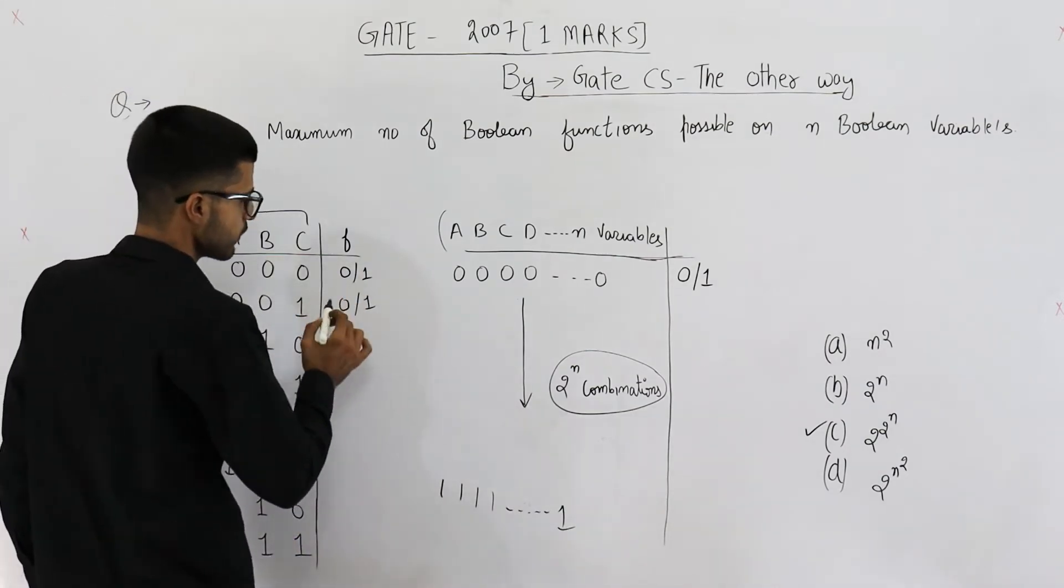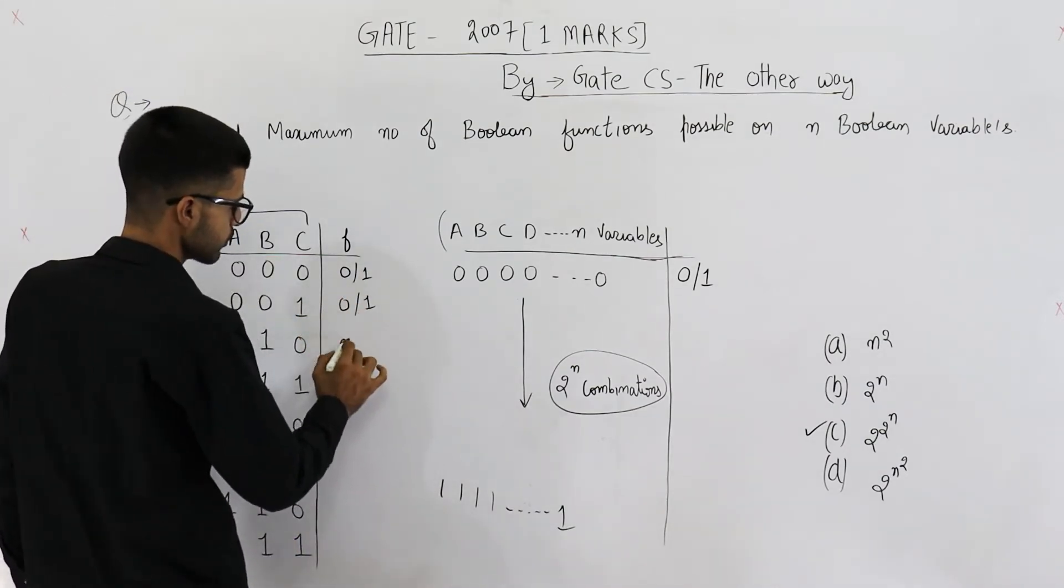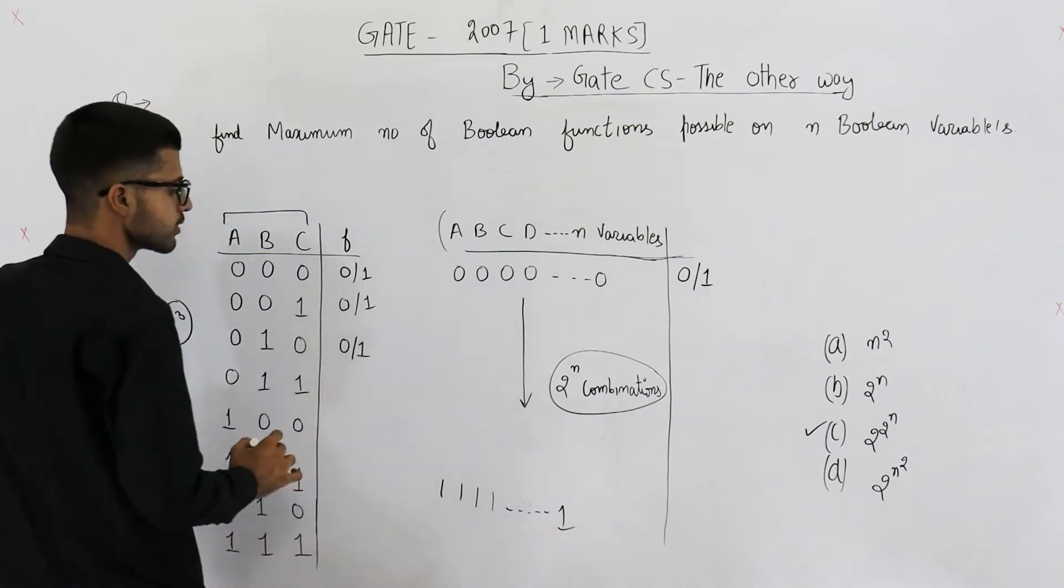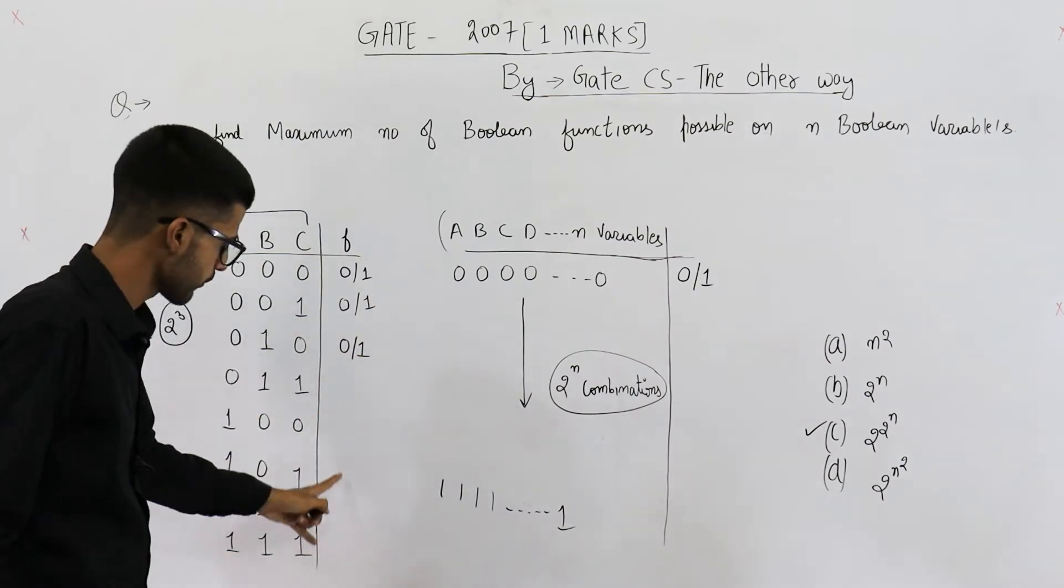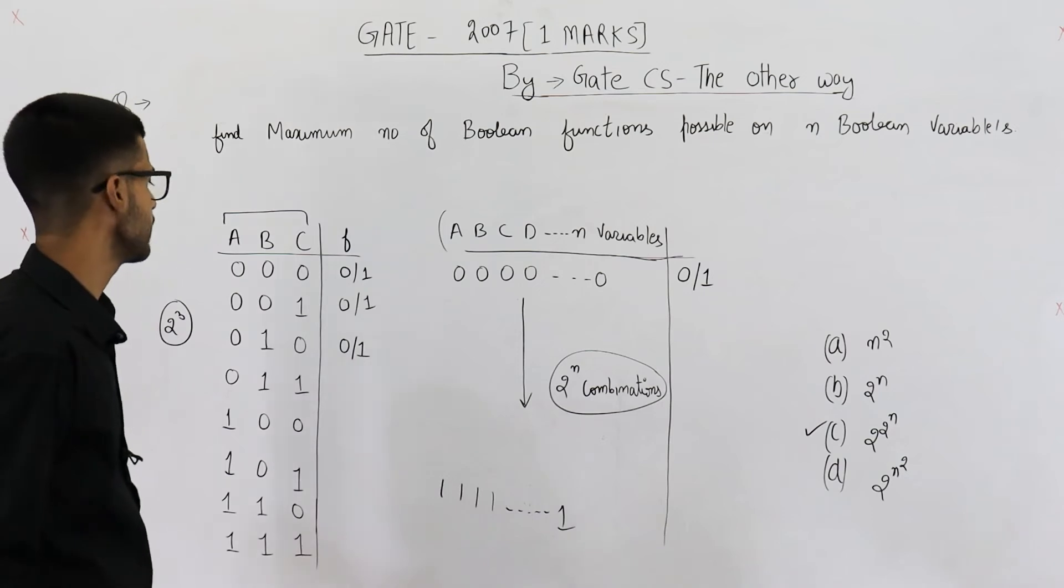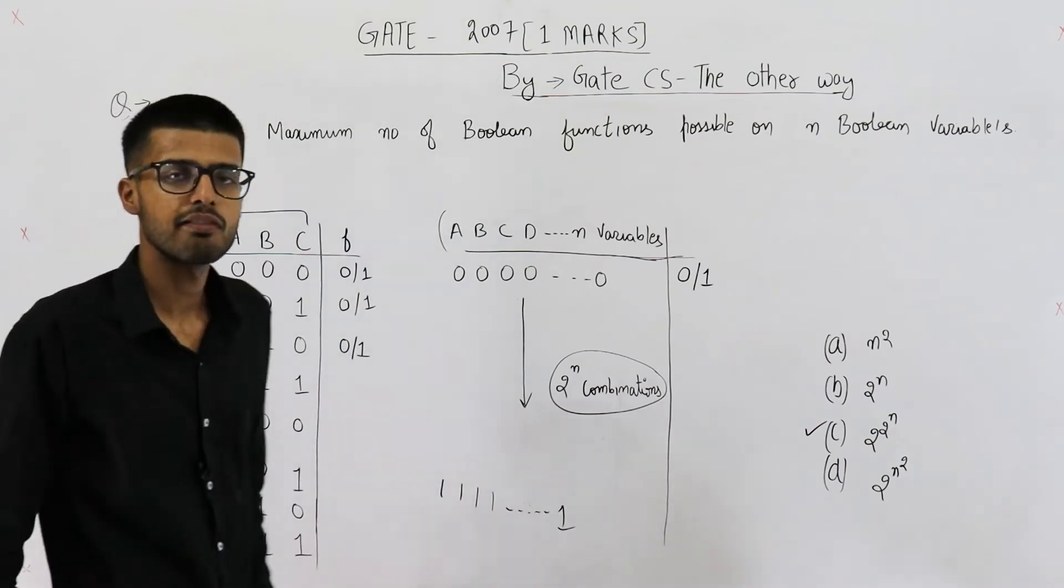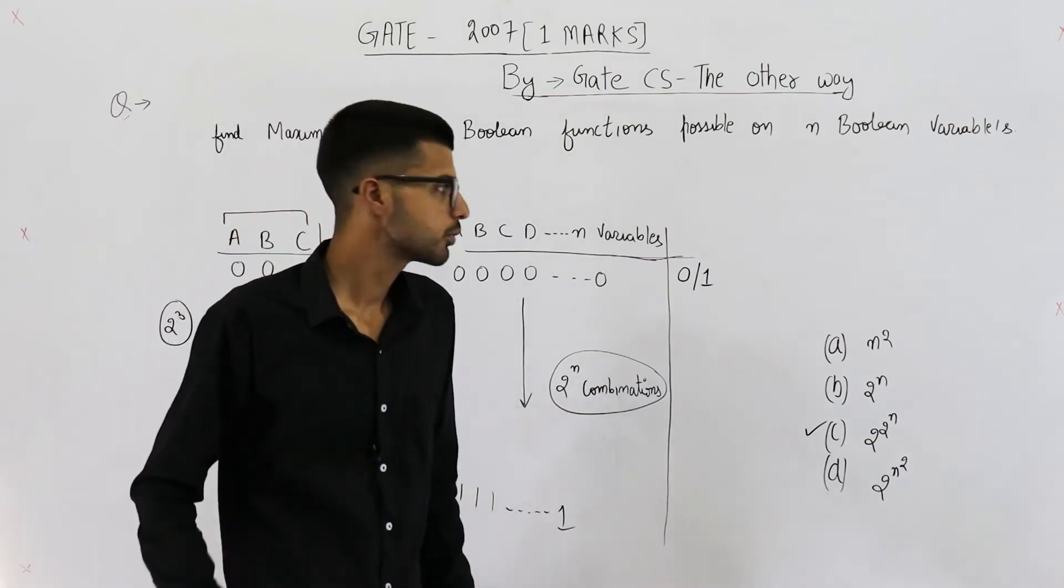The output can be either 0 or 1, either 0 or 1. Here also the output can be either 0 or 1, so on. For all of these eight inputs, you can have two possible outputs.